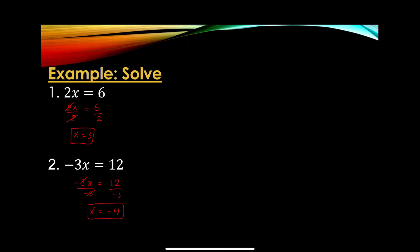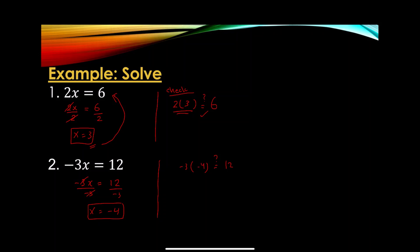To check our answers we plug the solution back in. For example 1: 2 × 3 = 6 — correct. For example 2: -3 × (-4) = 12 — correct. Both answers are verified.